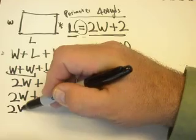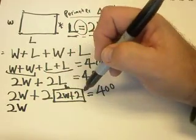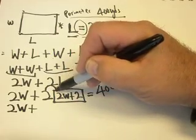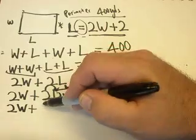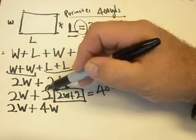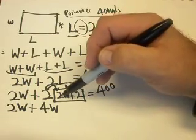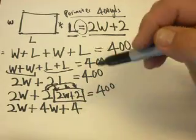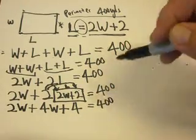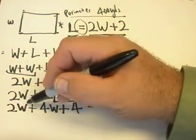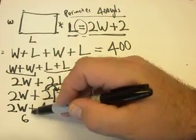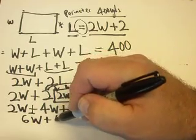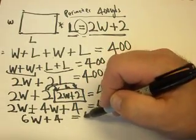Let's bring down 2W, and since it's two times everything in the parentheses, we distribute. Two times 2W is 4W. Then distribute to the other term: two times two is four. So we get 2W plus 4W plus 4 equals 400. Now let's combine the W terms: 2W plus 4W is 6W. So 6W plus 4 equals 400.